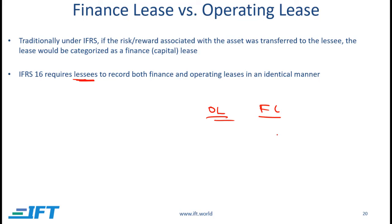If the risk and reward is being transferred, then the lease will be classified as a finance lease, and the leased asset will be removed from the balance sheet of the lessor. On the other hand, if the risk and reward is not being transferred, then the lease will be classified as an operating lease, and the asset will remain on the balance sheet of the lessor.